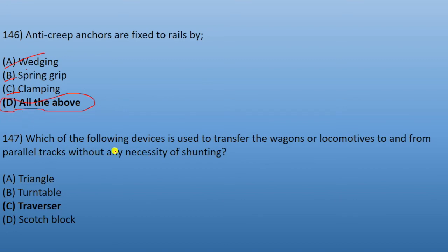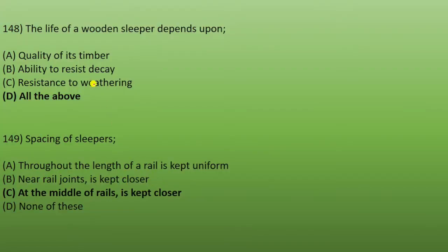Next: which device is used to transfer vehicles and locomotives to and from parallel tracks without excessive shunting? The answer is the traversal. The turntable rotates, the scotch block stops movement, and the triangle is not used today — the traversal is the correct device. Next: the life of a wooden sleeper depends upon the quality of its timber and its ability to resist weathering — all of the above.